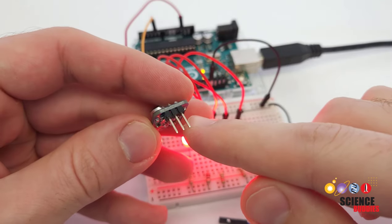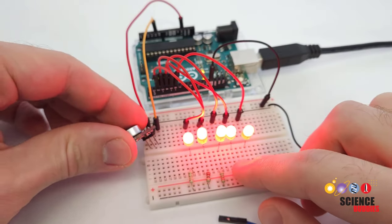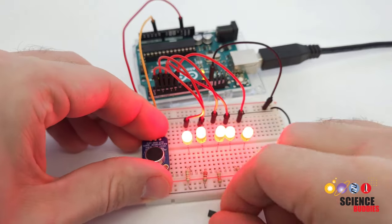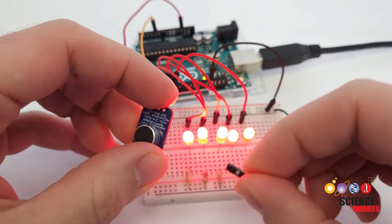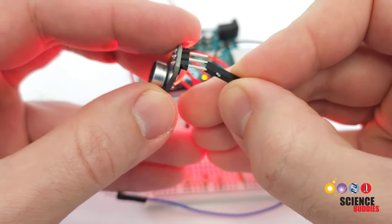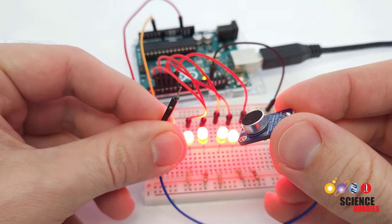You will typically need to solder header pins to the amplifier board, which you can then use to put the microphone directly into a breadboard and connect your Arduino with jumper wires. Or if you would like to mount the microphone somewhere else off your breadboard, you can use male-female jumper wires to connect to the header pins with the female end and then connect the male end to the Arduino or your breadboard.